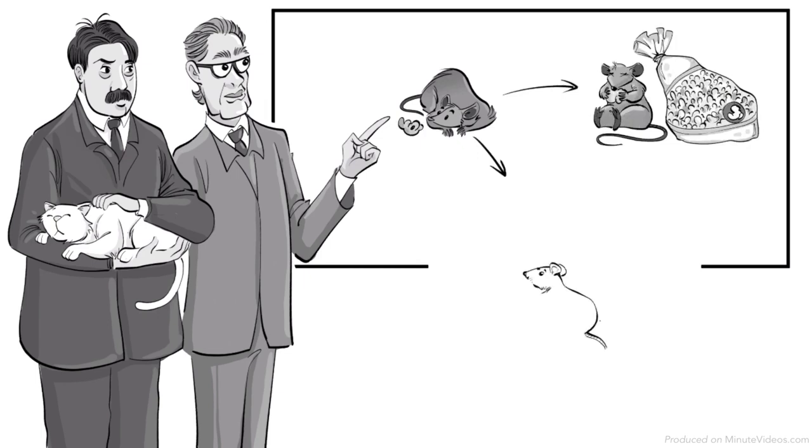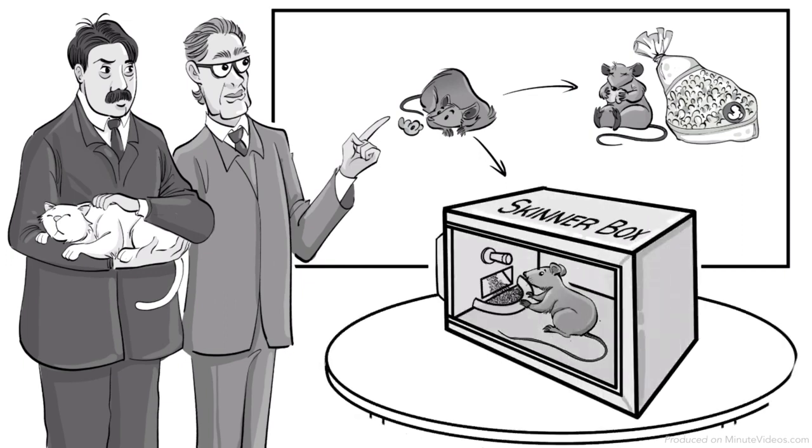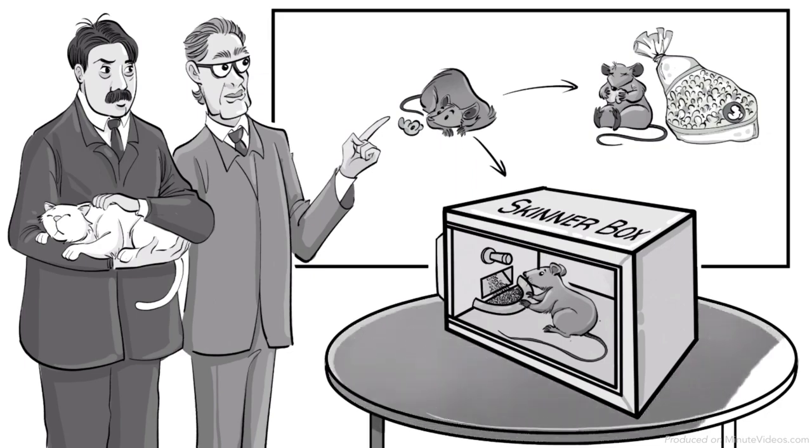To test this, he placed a rat inside an operant conditioning chamber, which later became known as the Skinner box. Among other things, inside the box was a lever that would release food when pressed.